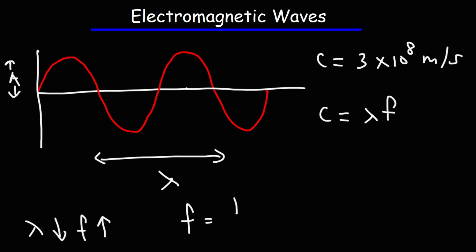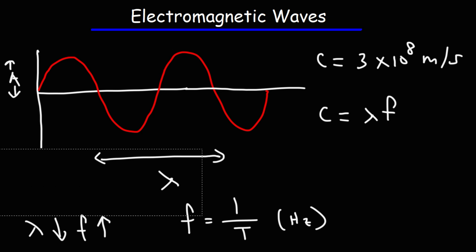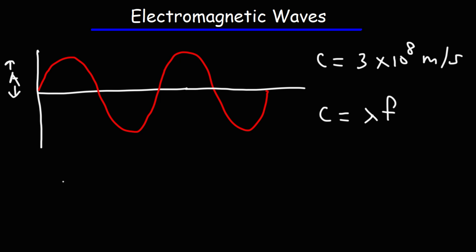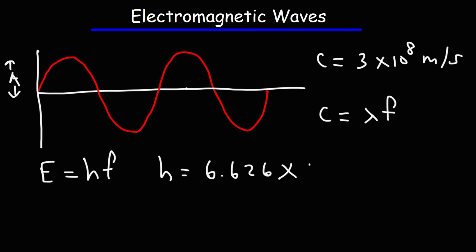The frequency is inversely related to the period of a wave. The period is the time it takes for the wave to complete one cycle. The frequency is the number of cycles that it can make in one second. The unit of frequency is the hertz, and for period, it's in seconds. The energy of an electromagnetic wave is equal to Planck's constant times the frequency. Planck's constant is 6.626 times 10 to the negative 34 joules times seconds.